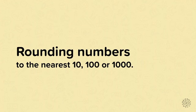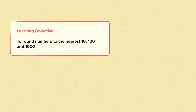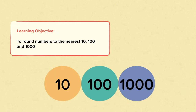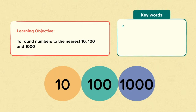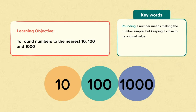Rounding numbers to the nearest ten, hundred or thousand. In this nugget the learning objective is to round numbers to the nearest ten, hundred or thousand. Rounding a number means making the number simpler by keeping it close to its original value. Rounding is often used to estimate. An estimate means finding an answer that is close enough to the exact answer.